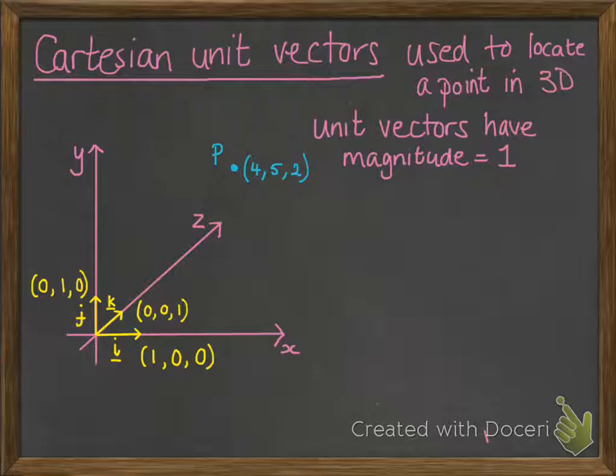And k in the z direction. So you can put those together to make any point that you want in those dimensions. So we're looking at this vector here for P. So P is this point at 4, 5, 2.